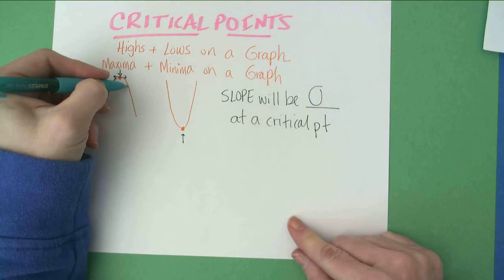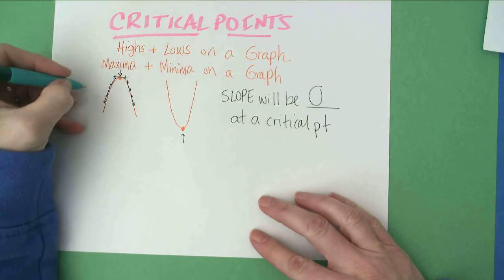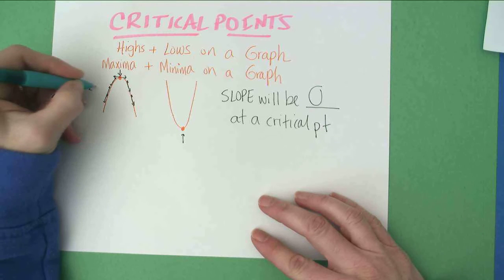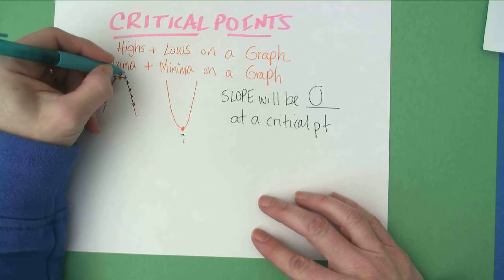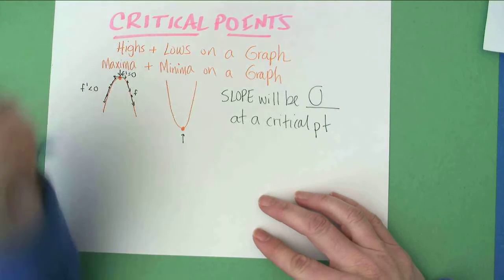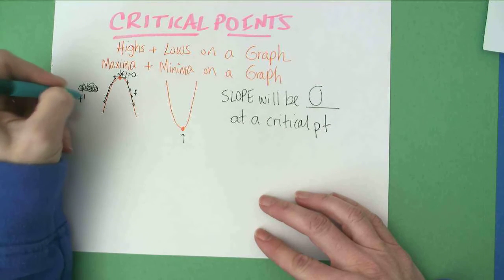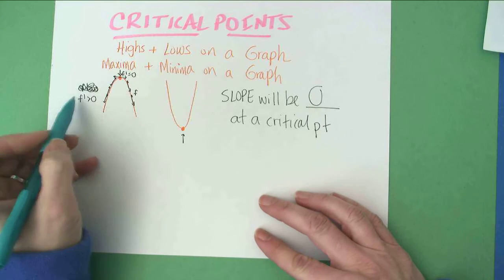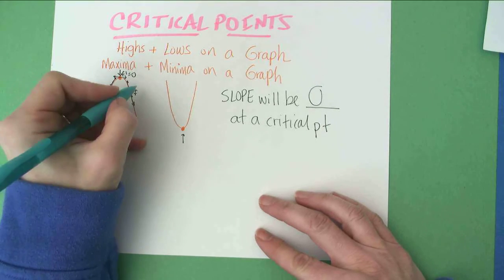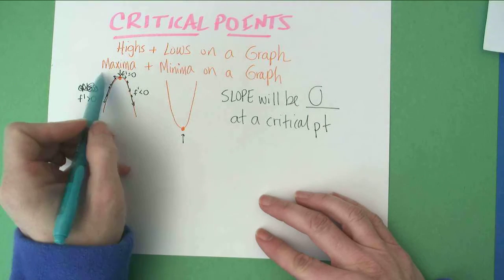And then as you leave the critical point, you're going to have some negative slopes here. So if your f prime goes from being positive, greater than zero, to being zero at the critical point, then to being negative or less than zero, then you've got yourself a maximum.